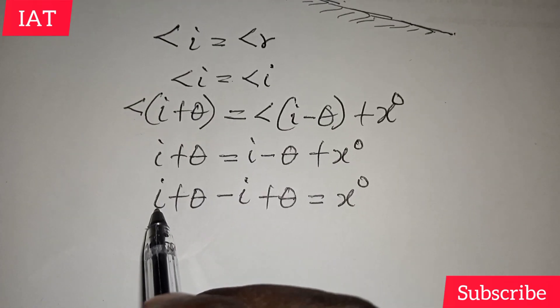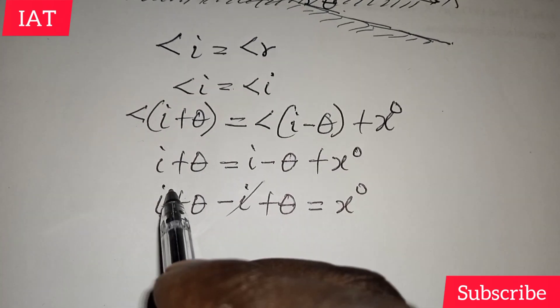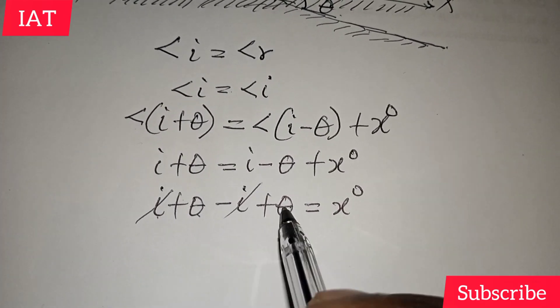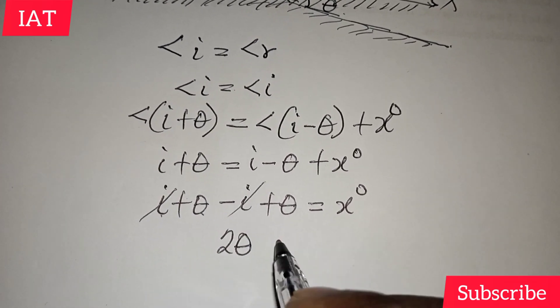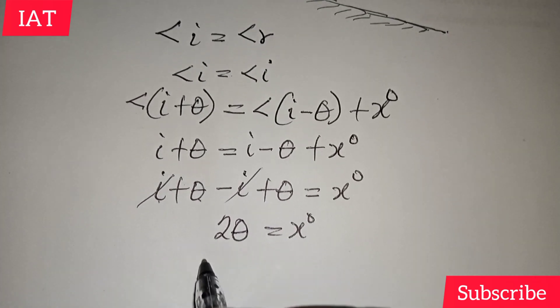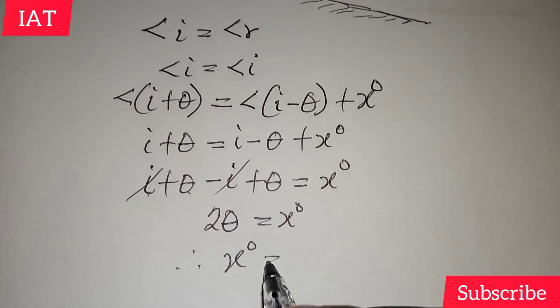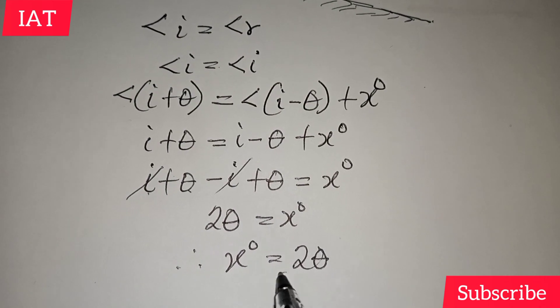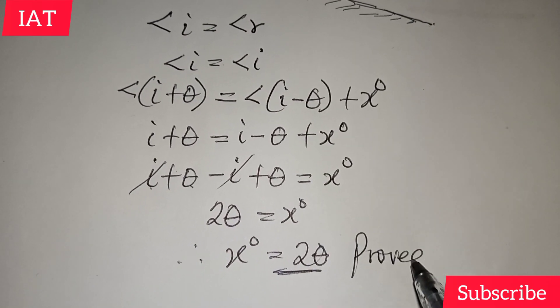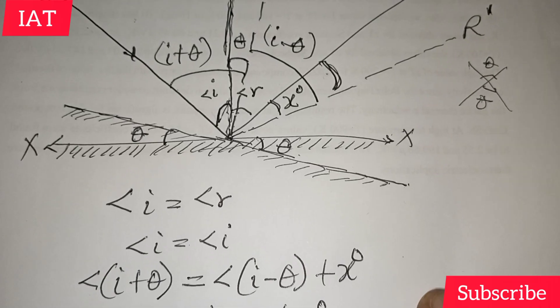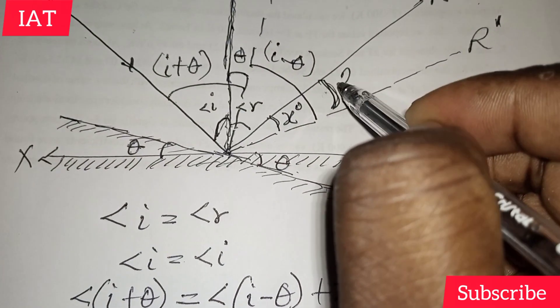So of course, from this point, you know that i-i will give zero. So θ+θ will give us 2θ, which equals to x degrees. So therefore, x degrees is equal to 2θ. So here, we have proven that this angle will be 2θ.